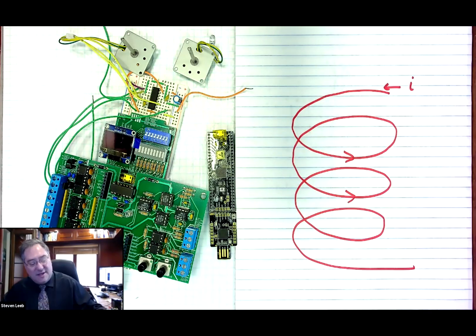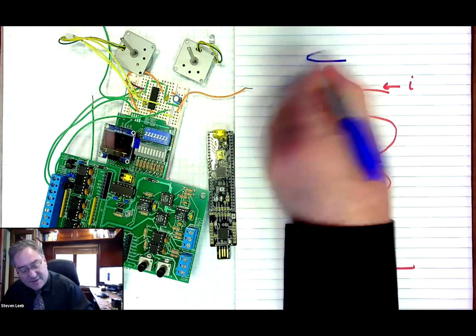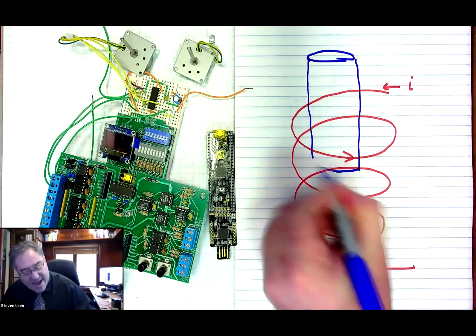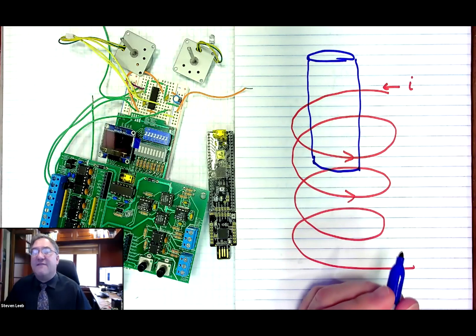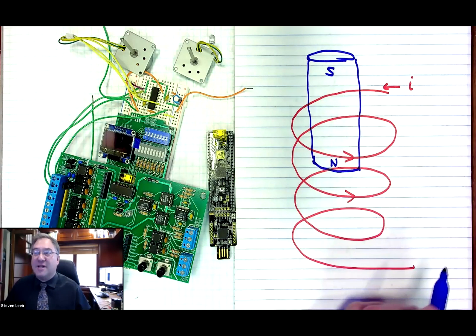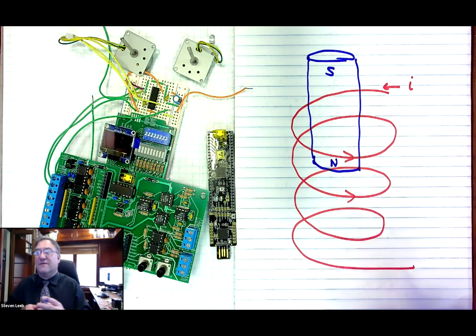And I'm going to imagine that I drop a magnet into it. So the magnet is just like you might have poked on your refrigerator, but it's going to have a North Pole and a South Pole. It's exactly like the one on your refrigerator.